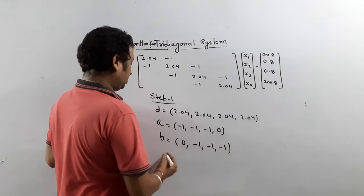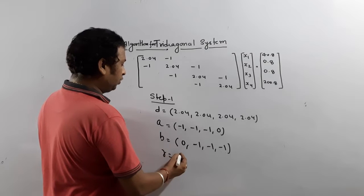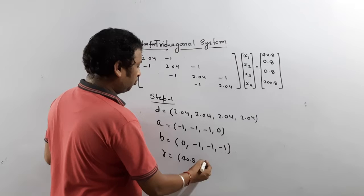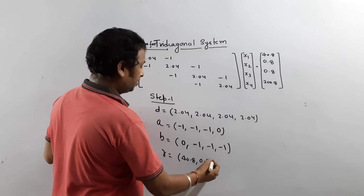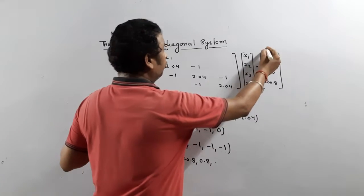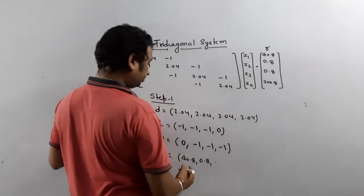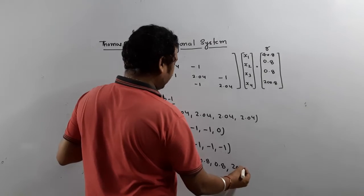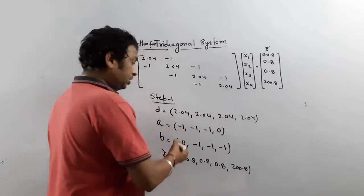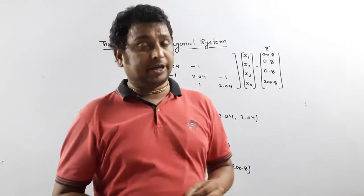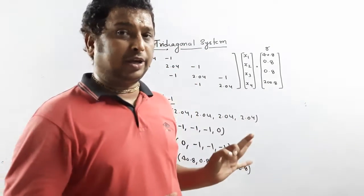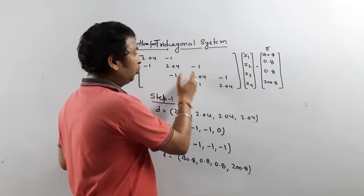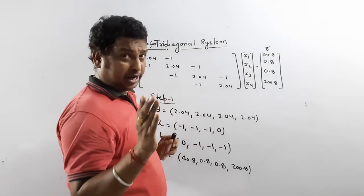The R values — the right-hand side — are R1 = 40.8, R2 = 0.8, R3 = 0.8, and R4 = 200.8. This completes Step 1, which is very important. You have to define the values in this way, otherwise you will get confused. Always define the main diagonal by D with values D1, D2, D3, D4.